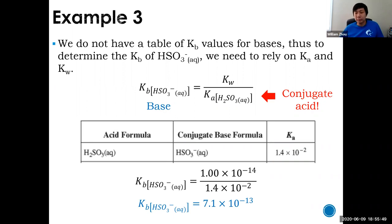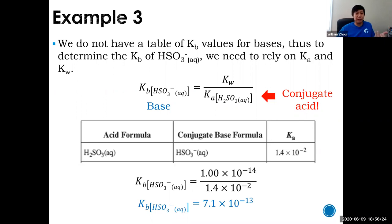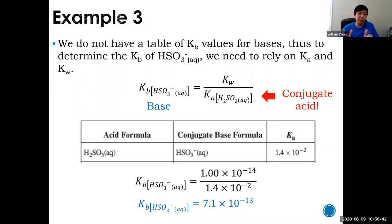I went out of my way to make a mistake just to show you — this is a very common error. A student once made this mistake on a test and got the same value for Ka and Kb, which would mean a neutral solution. She knew that couldn't be right. So please: only for conjugate acid-base pairs. It's okay to make the mistake now — get it out of your system, get it right next time.